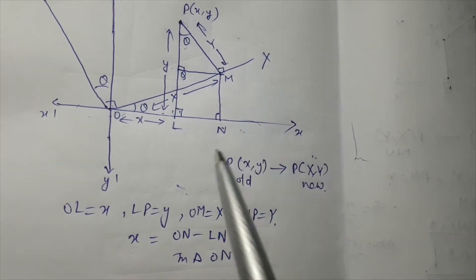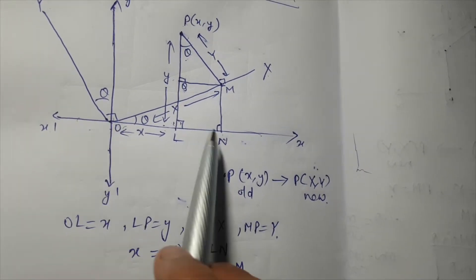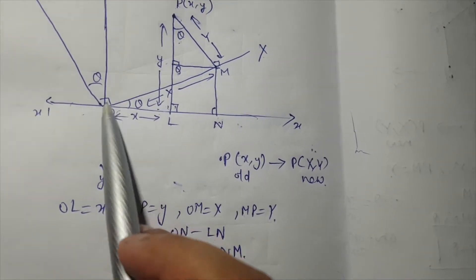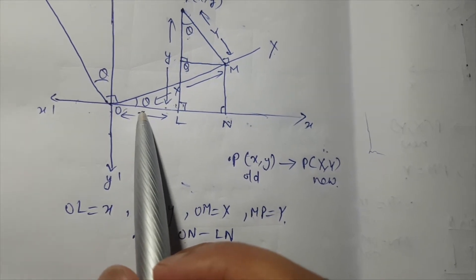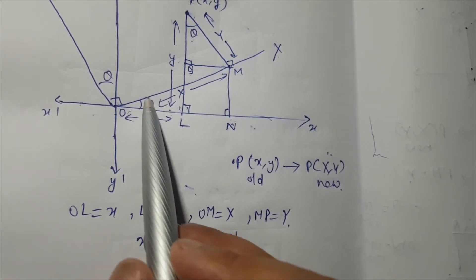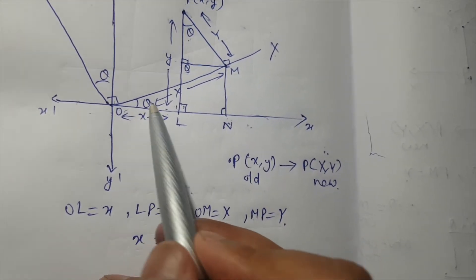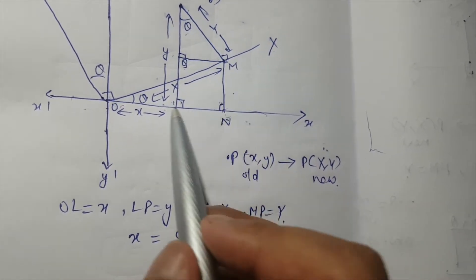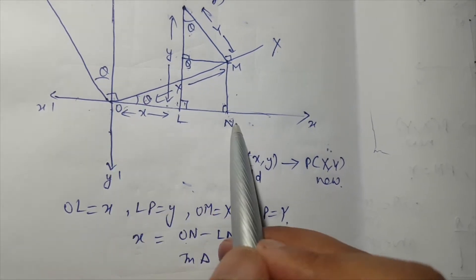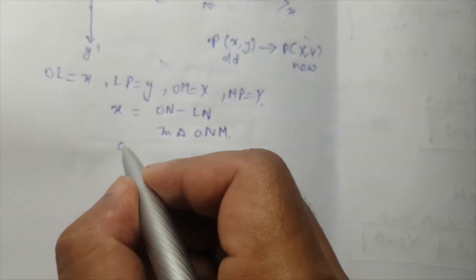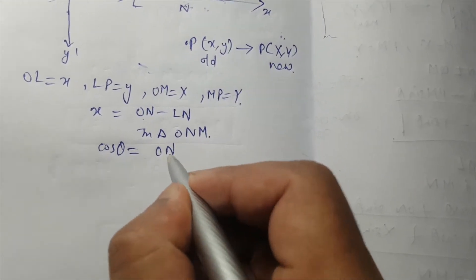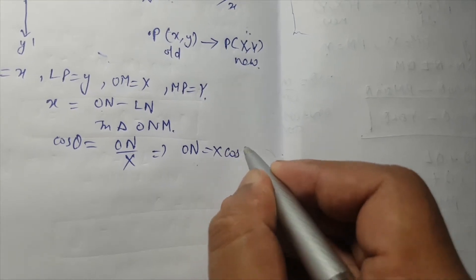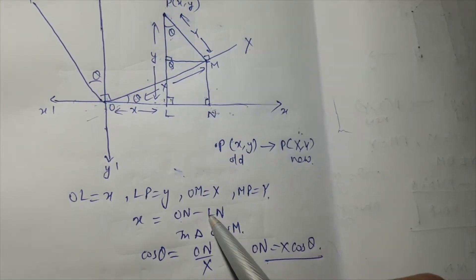Capital X equals ON minus LN. In the triangle, using cosine: cos θ = ON / x, so ON = x·cos θ. Now we need to write LN in terms of something we can use.